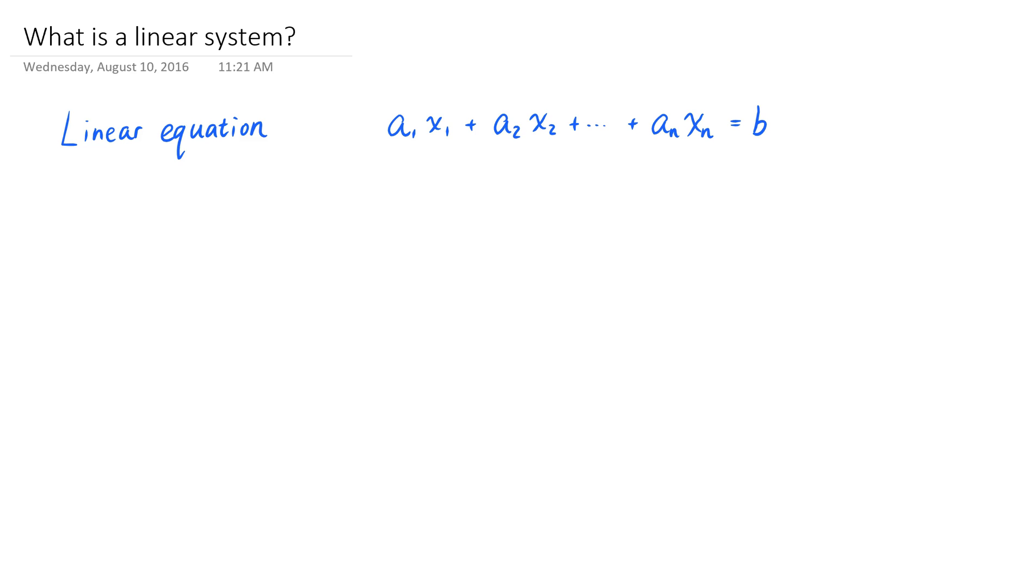In this video we give the definition of a linear system. A linear system in linear algebra refers to a system of linear equations. The definition of a linear equation was described in a previous video titled What is a linear equation? The link of that video is provided in the description section of this video.